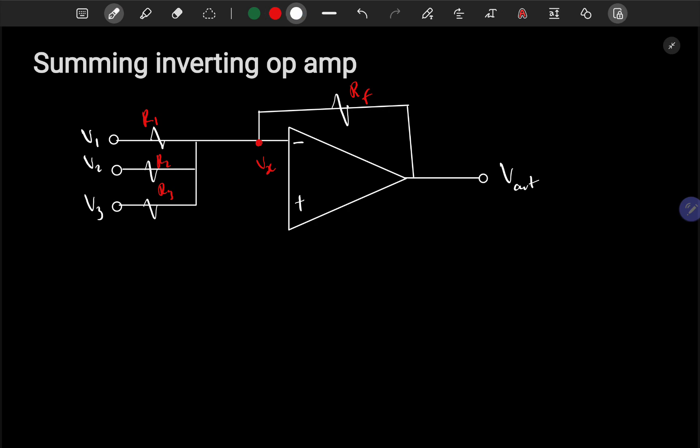What is happening now: the current at one, this branch, plus current at two, plus current at three should equal current on this branch with Rf. Let me say current out, I think that's fair.